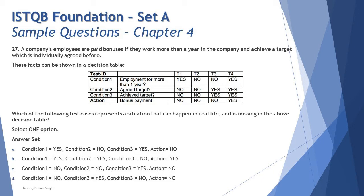Option A says: condition one is yes, condition two is no, condition three is yes, and action is no. The employee has one year of employment, did not agree to a target, but claims to have achieved the target. This is an unrealistic situation — like saying you did not participate in a competition but you won it. That's completely unrealistic, so Option A can be eliminated.